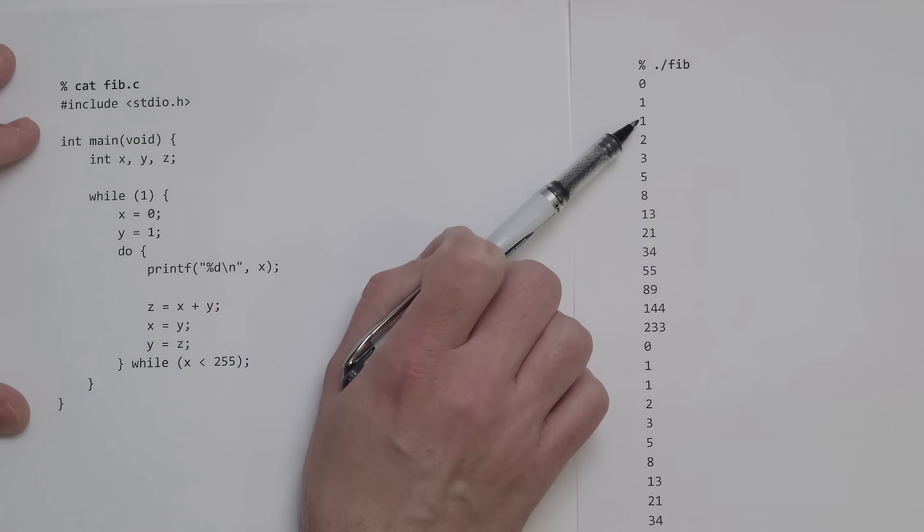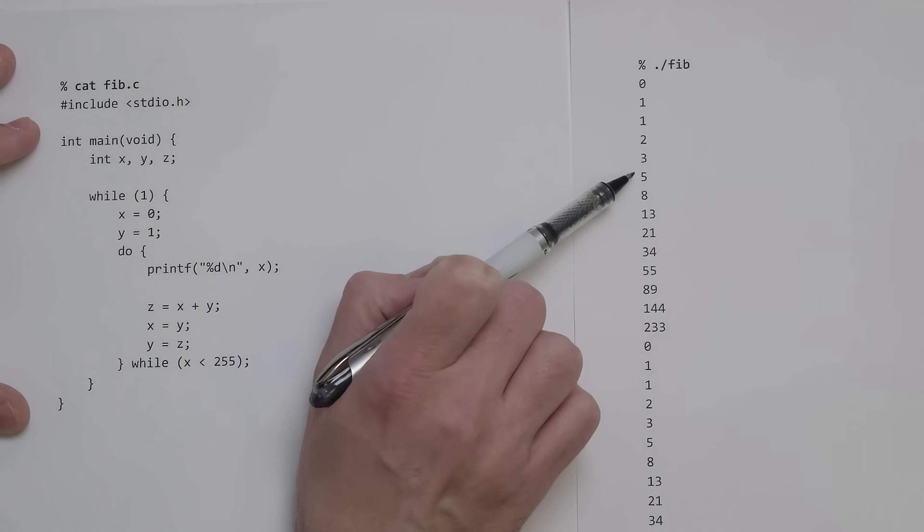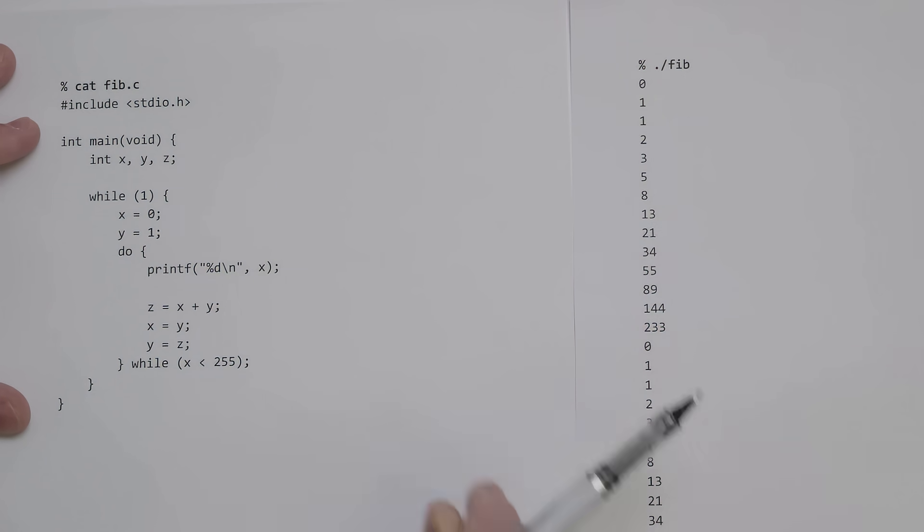So 0 plus 1 is 1, 1 plus 1 is 2, 1 plus 2 is 3, 2 plus 3 is 5, 3 plus 5 is 8, so on and so forth all the way down.